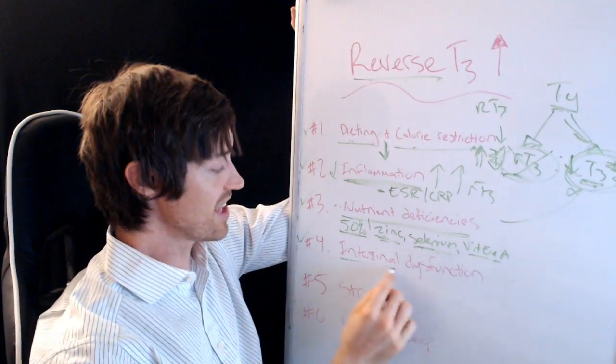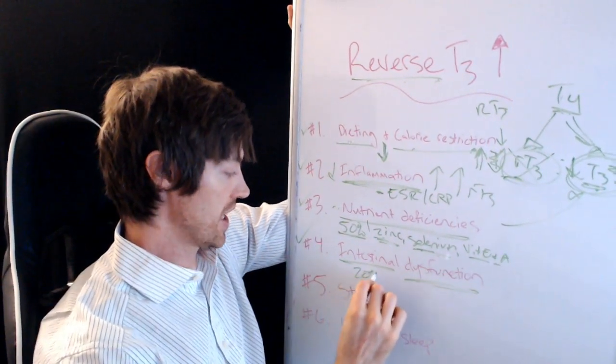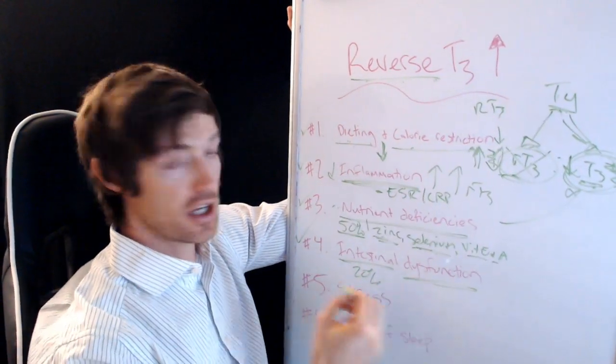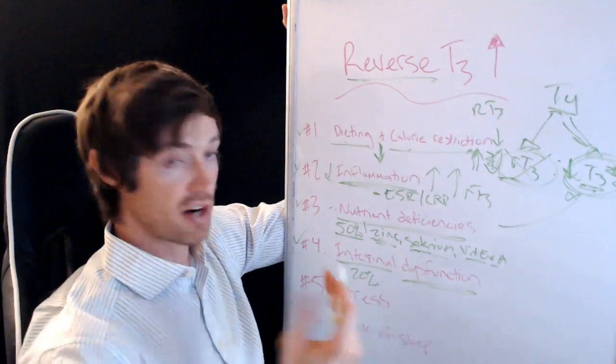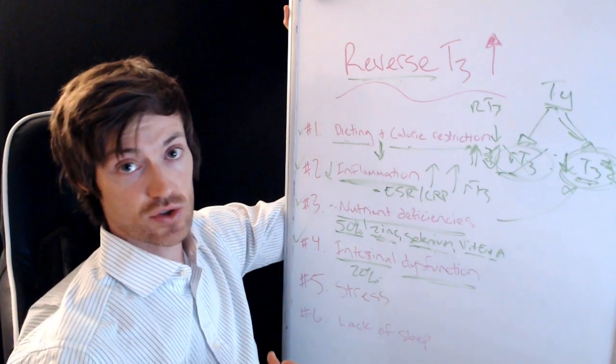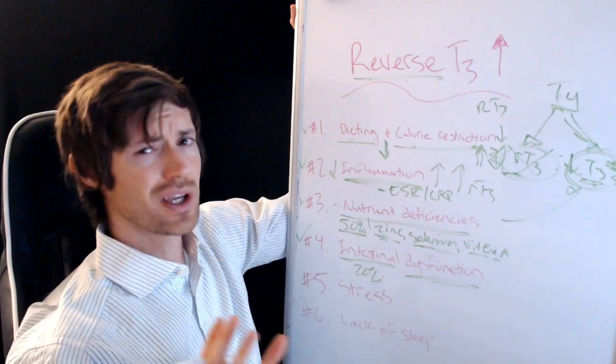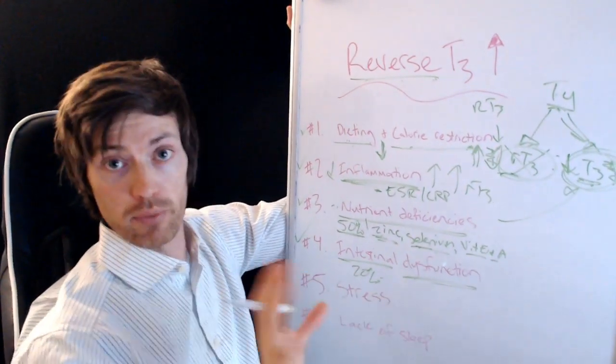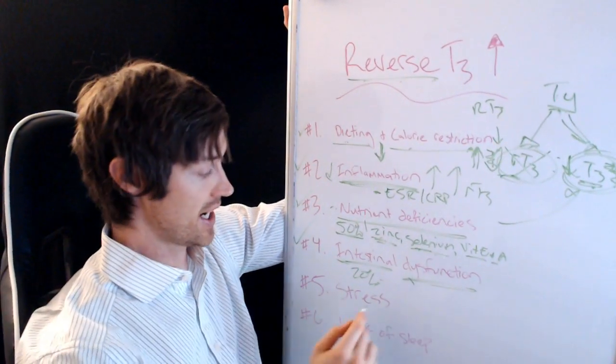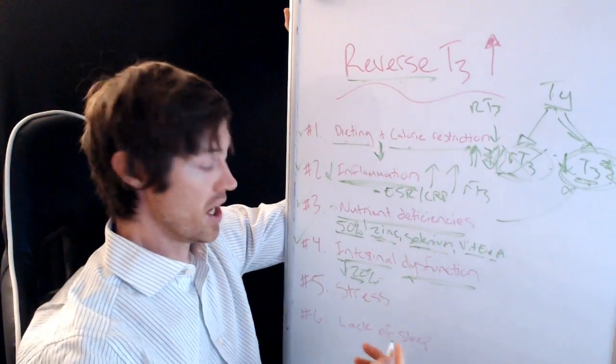And if you have those deficiencies, your body will take that T4 and turn it into RT3 or reverse T3, which we don't want. Number four is anything that causes intestinal dysfunction. So here's a number that I want you to remember, and that is 20%. And what that number reflects is the amount of T4 that is converted in your entire body. So 20% of all the conversion that's occurring from T4 to T3 occurs in the gut. In your intestinal tract, and your intestinal tract is the site of a lot of different production of hormones, especially serotonin and immune function. So it's an important place.